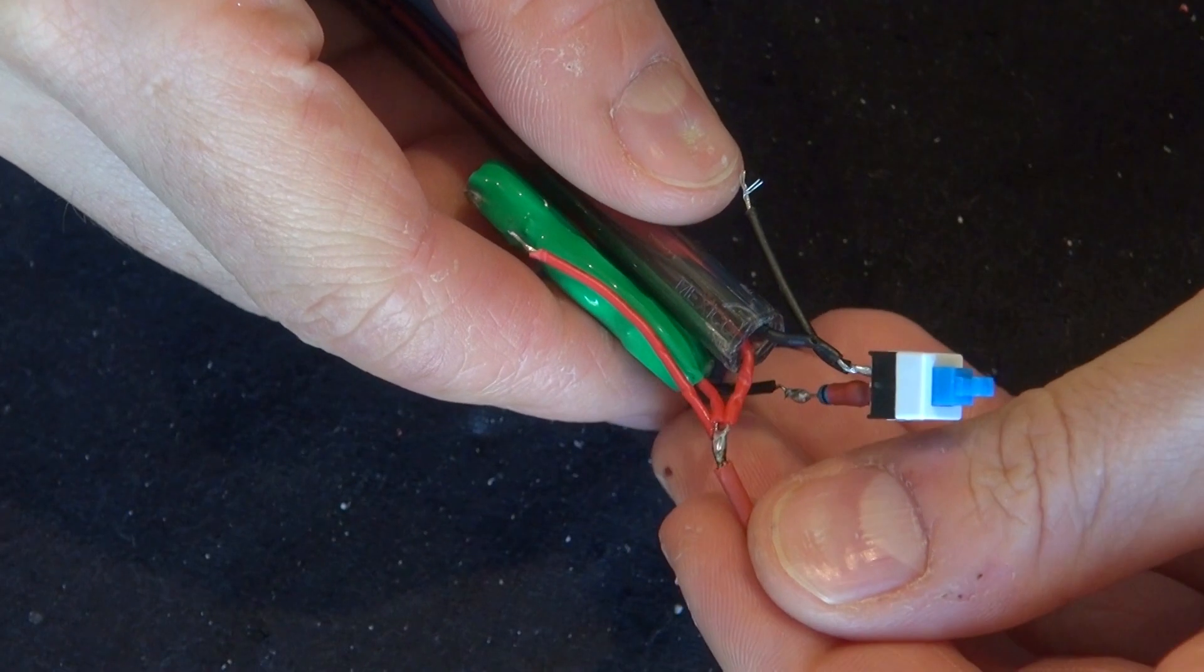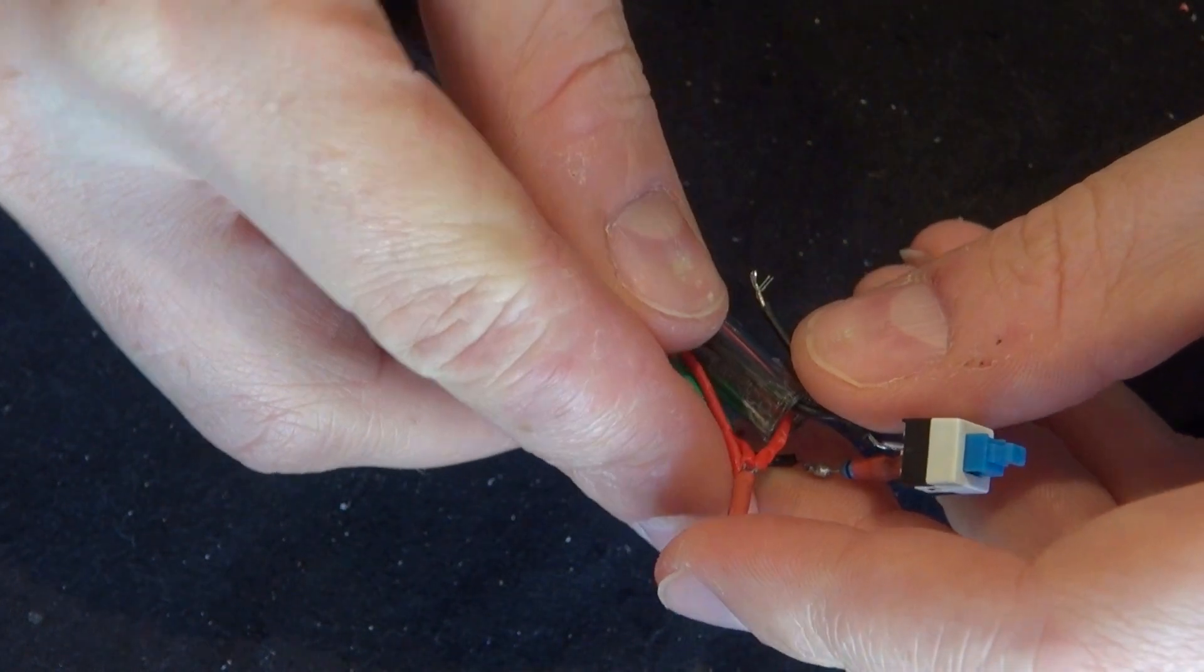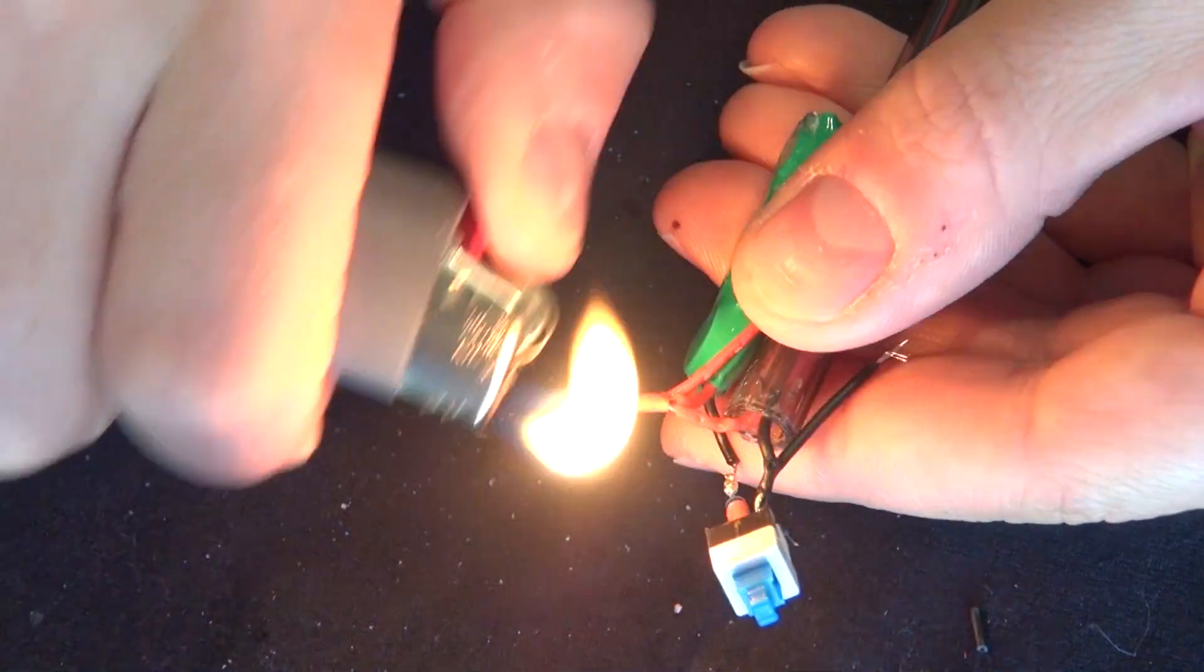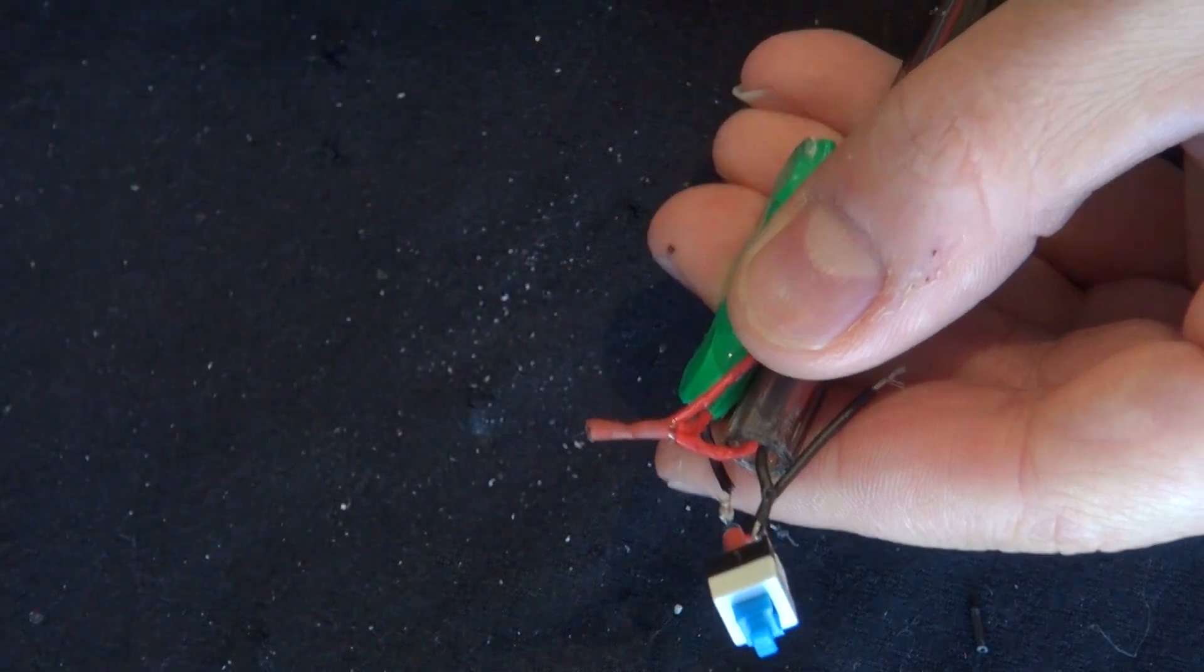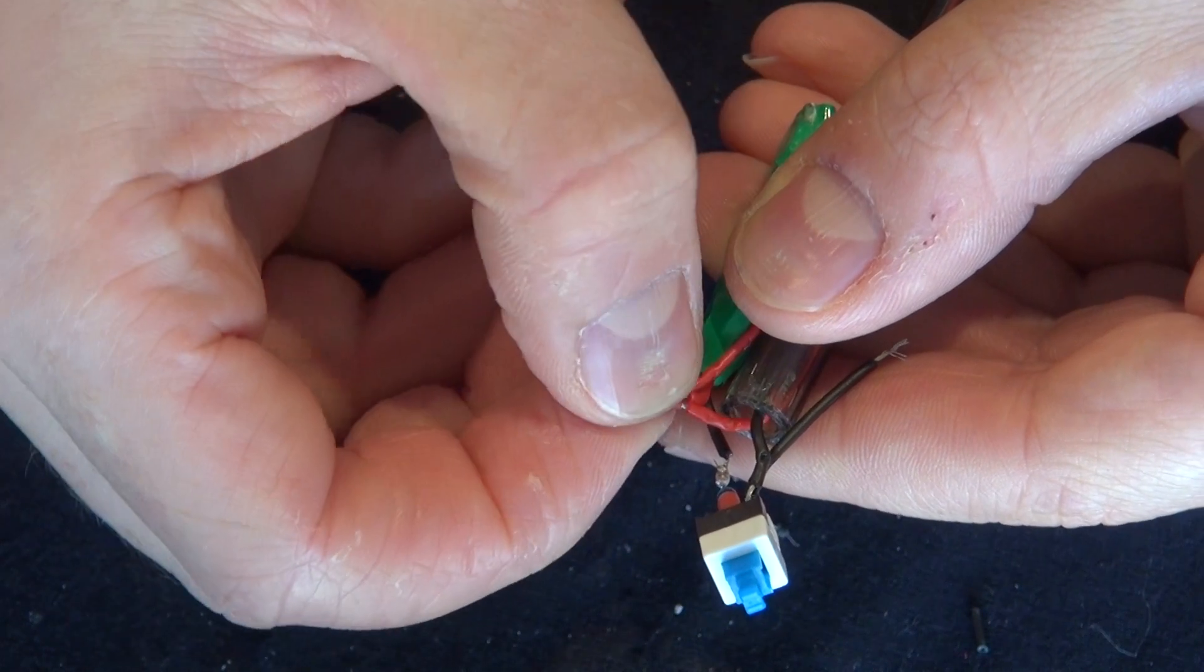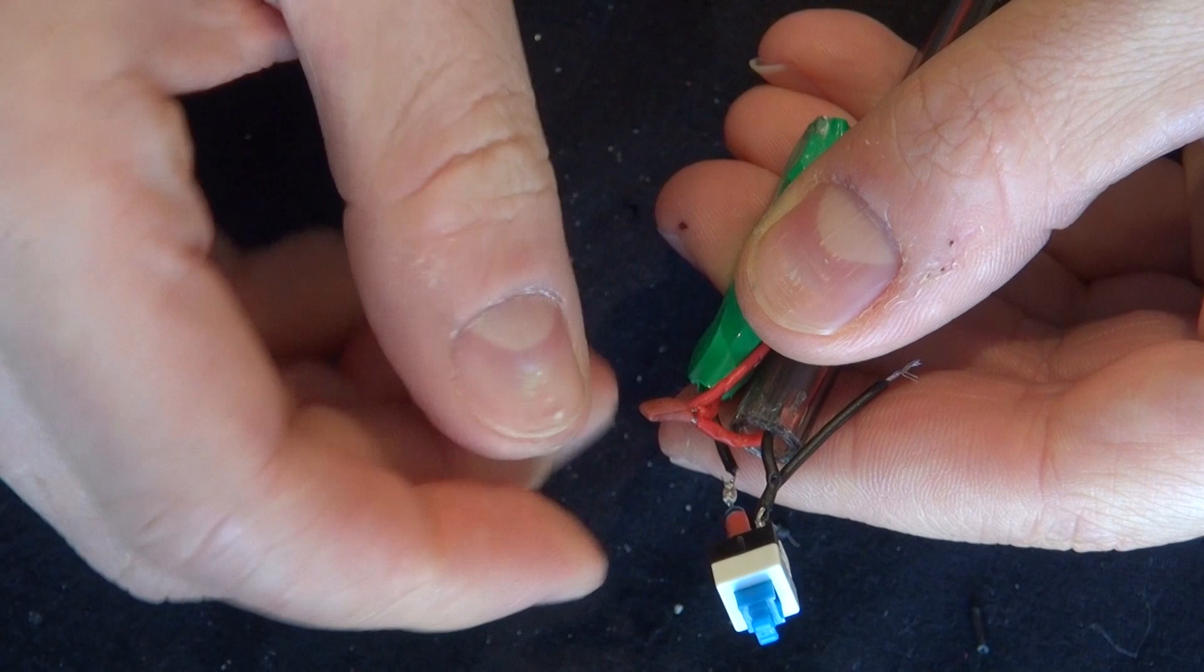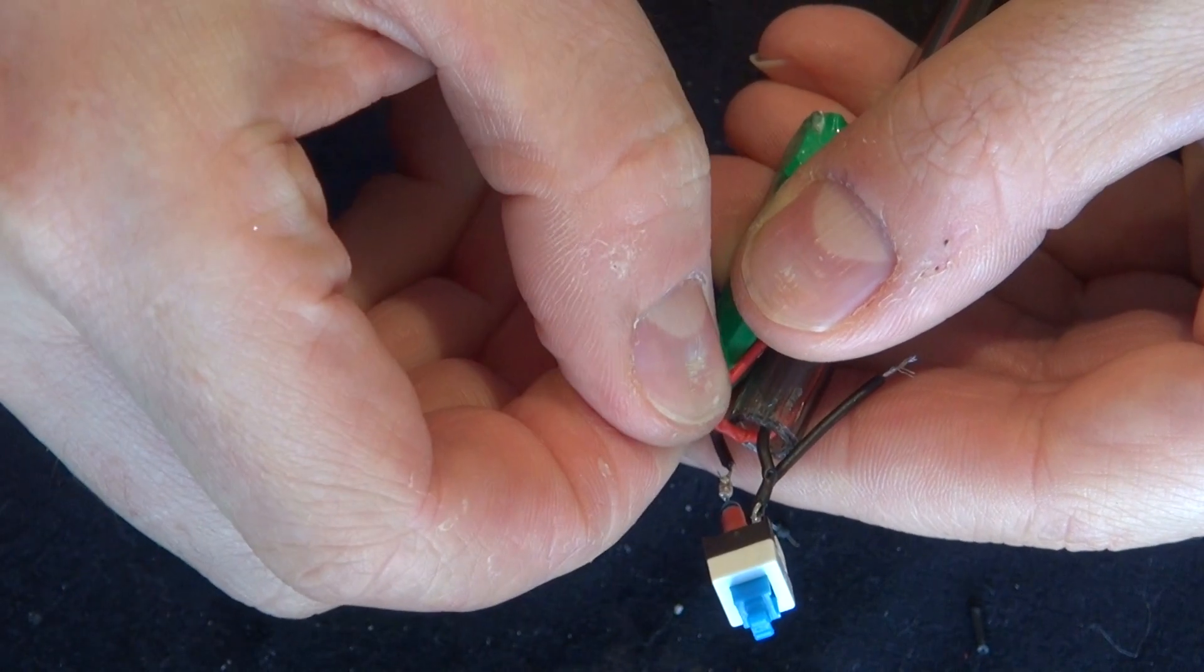Now I'm going to take the shrink tube and cover the soldered wires to keep them insulated and prevent any shortage. Shrink it. Careful, it's hot, but still soft to pinch. Melt it a little more. Now it should be stuck together perfectly.